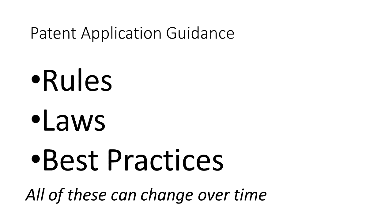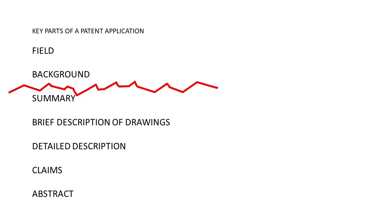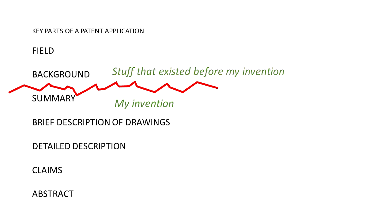Think of an imaginary line of demarcation between the background and the sections below it. South of our line is the invention — in the summary, detailed description, claims, and abstract, we are talking about and describing everything about our invention: how it works, what it does, and the advantages. Above the line we have stuff that existed before our invention came along.